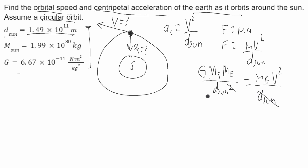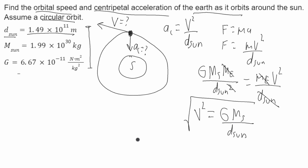The mass of the Earth cancels, and one factor of d of the sun cancels. We're left with v squared equals G times the mass of the sun over the distance from the sun to the Earth. Taking the square root of both sides, v equals the square root of G times the mass of the sun over the distance from the sun to the Earth.